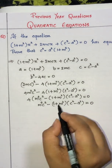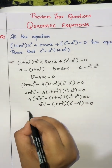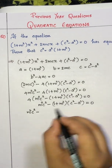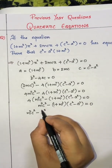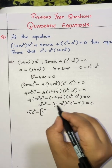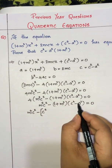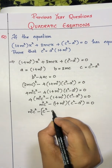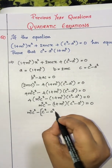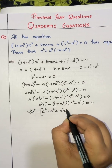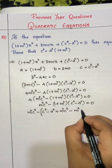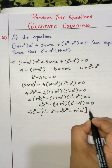Now we expand the bracket: m²c² - [c² - a² + m²c² - m²a²] = 0, giving m²c² - c² + a² - m²c² + m²a² = 0.